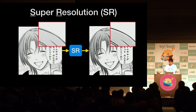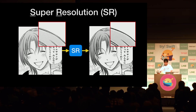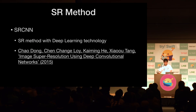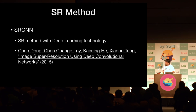Super Resolution, or SR for short, is a technique that converts a low resolution image to a high resolution image. There is a famous SR method called SRCNN. It is an SR method using deep learning technology, described in a paper three years ago.